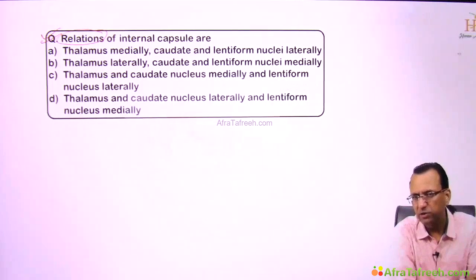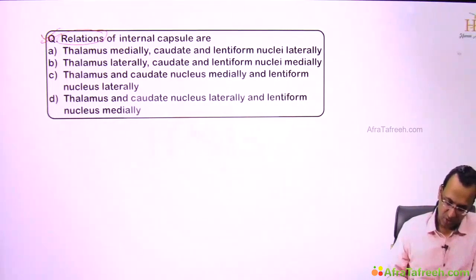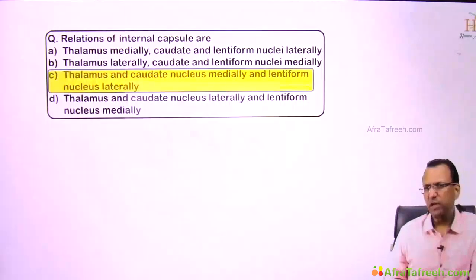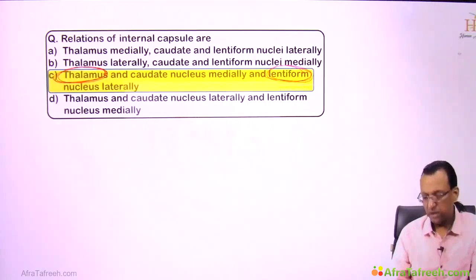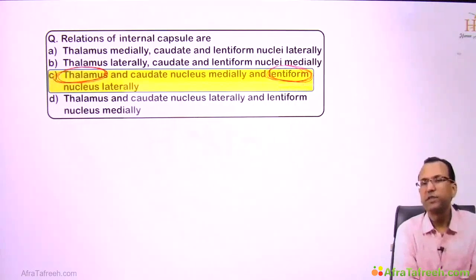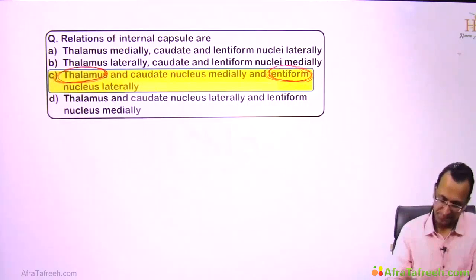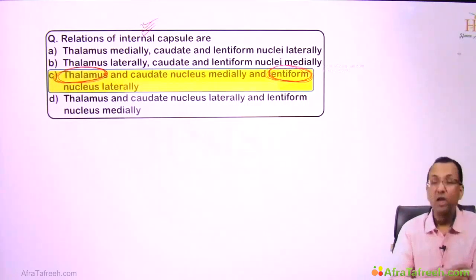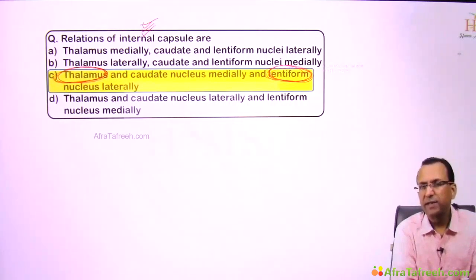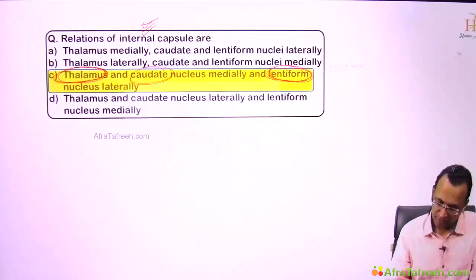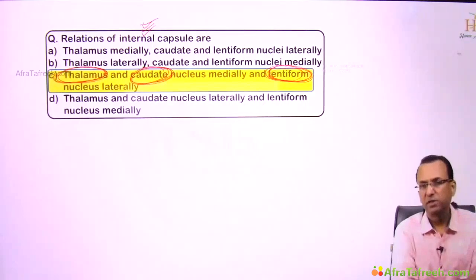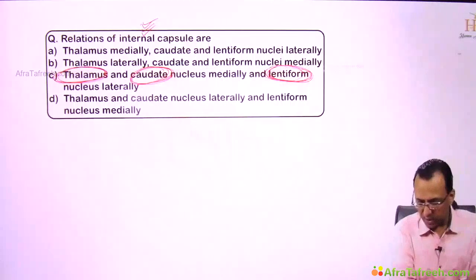What is your answer? Think about what is between the thalamus and the lentiform — that is the posterior limb of the internal capsule. And the anterior limb is sandwiched between the caudate and the lentiform.